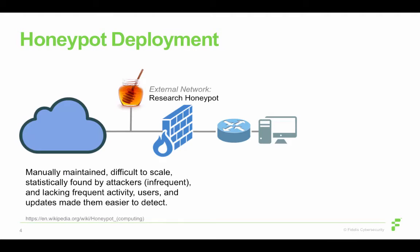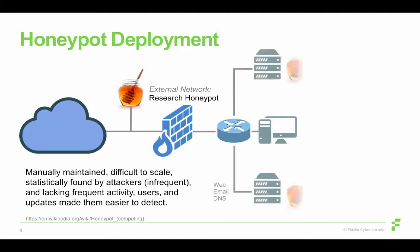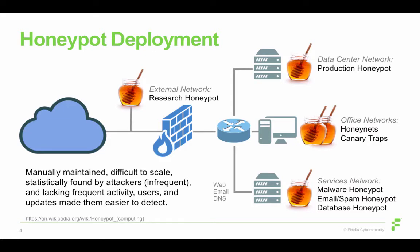For honeypot deployment, originally a research honeypot was placed outside a firewall to attract attackers, learn their methods, see if they install their code, study that code for possible attribution, and learn to mitigate it. We may also use these inside — at risk of compromise in our data centers, office networks, and services networks — for malware research, email spam, or web service attacks that go after databases. Some specific cases, but not widespread use, and not really used as an alarm system, but more as a containment strategy to learn about attackers and their techniques and tools.